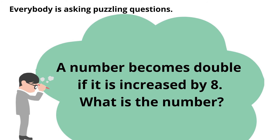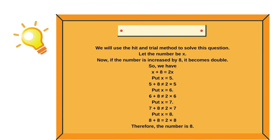A number becomes double if it is increased by 8. What is the number? We will use the hit and trial method. Let the number be x. If the number is increased by 8 it becomes double, so x plus 8 is equal to 2x. Putting x equals to 8: 8 plus 8 equals 2 multiplied by 8. Therefore, the number is 8.